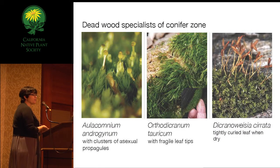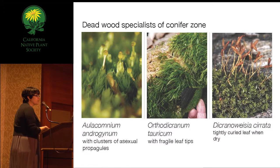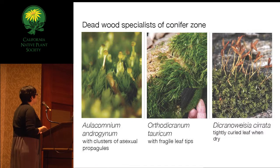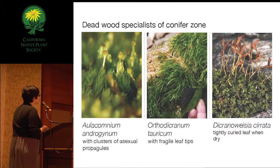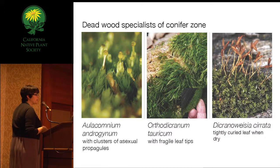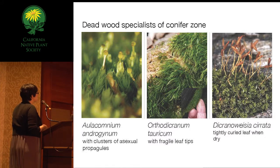Moving on to the conifer zone—if you were looking at dead wood, like a downed sequoia log, you'd find these species in high cover. Allocombium androgynum has gemmophores at the top containing clusters of gemmae. Orthodicranum taricum has a grassy appearance, and if you run your finger along it, the leaf tips break off as asexual propagules. Dicranum oisea serrata has a tightly curled crispate leaf and numerous yellow sporophytes.